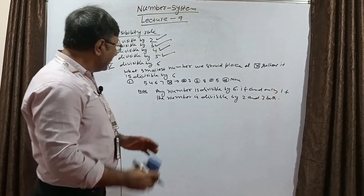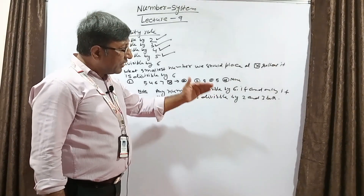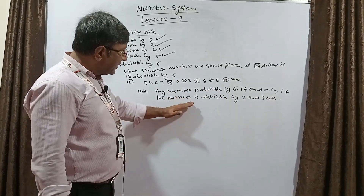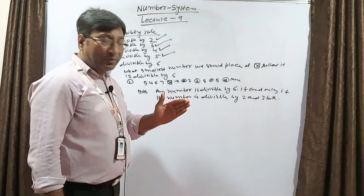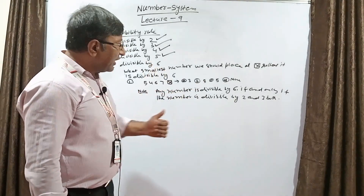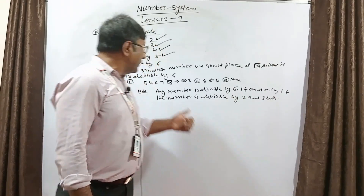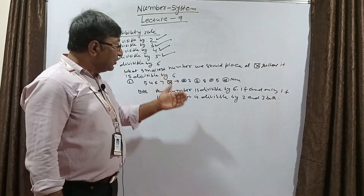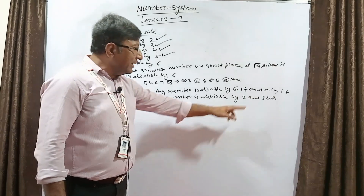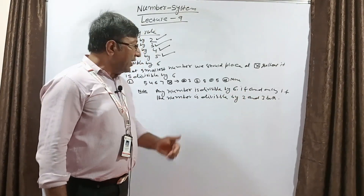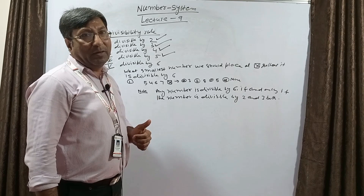So what is the technique? Any number is divisible by 6 if and only if the number is divisible by 2 and 3 both. We have already done: any number is divisible by 2 when the unit digit is 0, 2, 4, 6, or 8. And any number is divisible by 3 when the sum of the digits is divisible by 3.